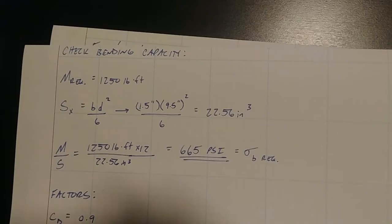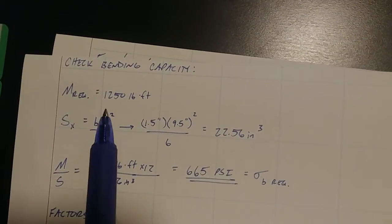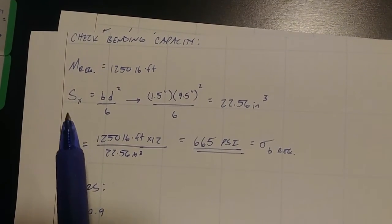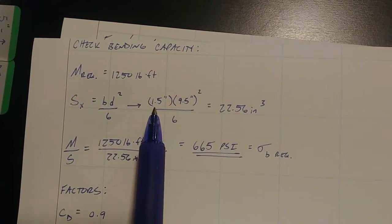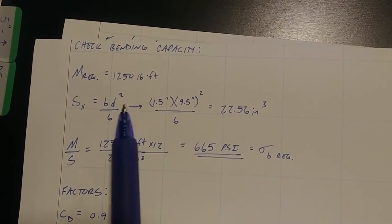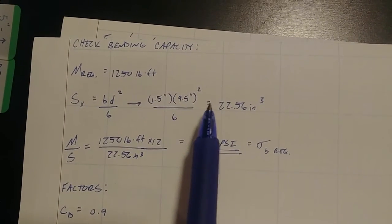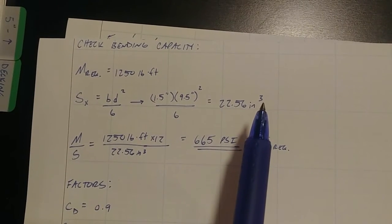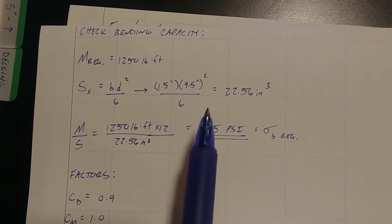Alright. So we want to check bending capacity. So we know a required moment, as we've said before, it's 1250 pound feet. We want the section modulus, which is BD squared over six. B being the 1.5, the skinny portion of the board and D being the long depth portion of the board. So 9.5, that gets us 22.56 inches cubed.